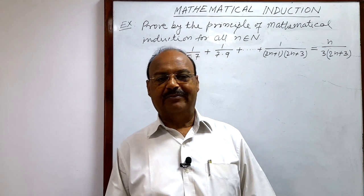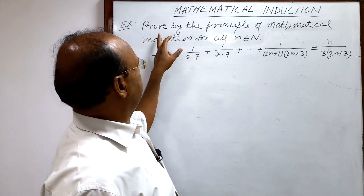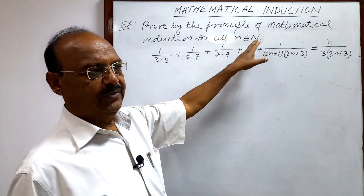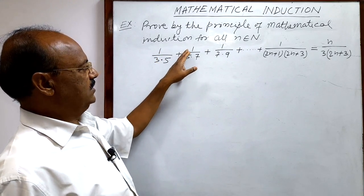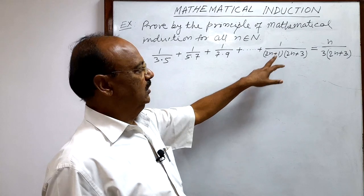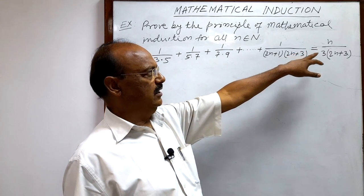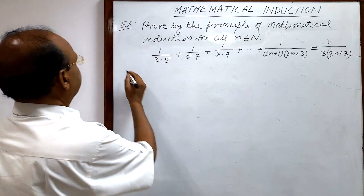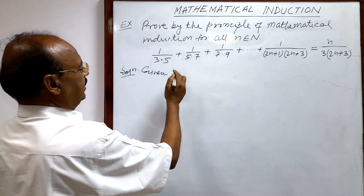Let us see a question from the chapter Mathematical Induction - a very interesting and important question. We have to prove by the principle of mathematical induction, for all n belonging to the set of natural numbers N, the mathematical statement: 1/(3×5) + 1/(5×7) + 1/(7×9) + ... up to the nth term 1/((2n+1)(2n+3)) equals n/(3(2n+3)).